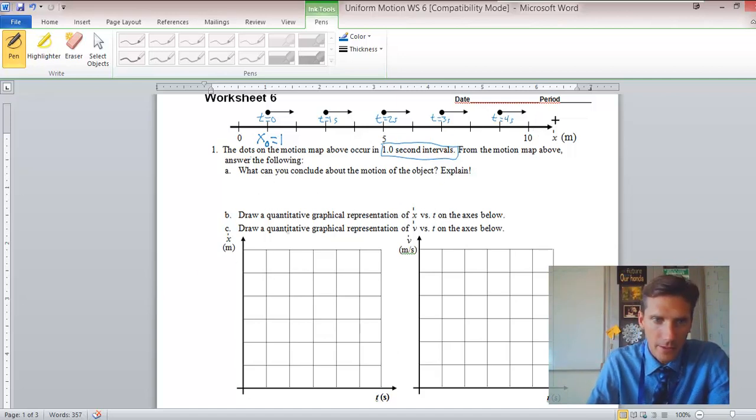So I'm thinking here, let's count these. We have one, two, three, four, five, six, so we should go by twos. This can be two, four, six, eight, ten, and twelve.